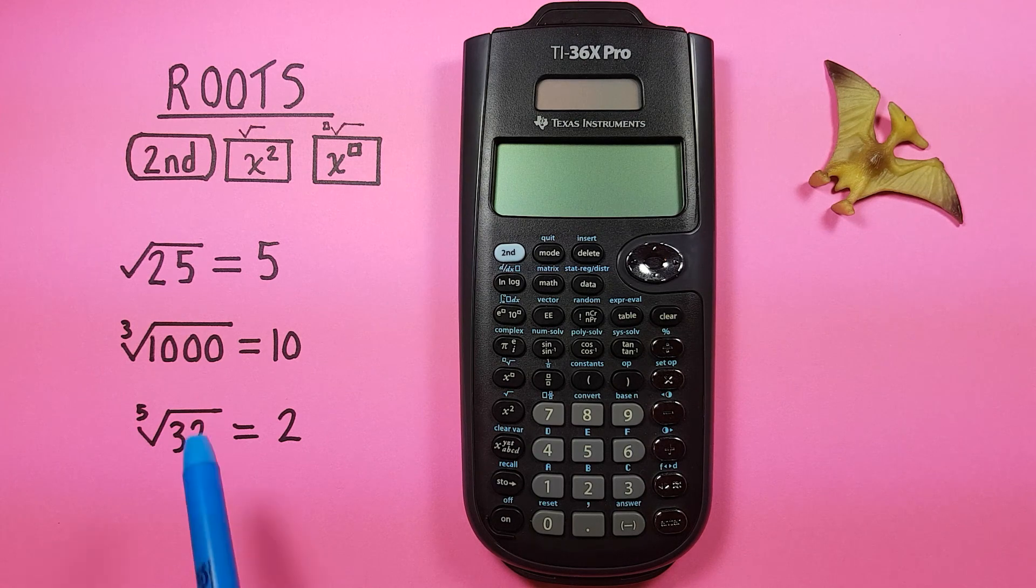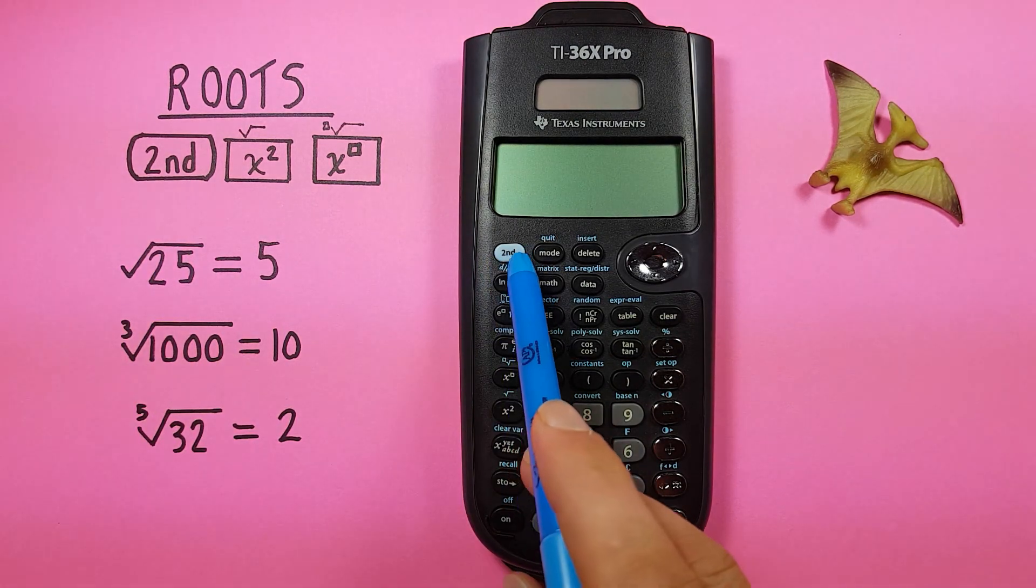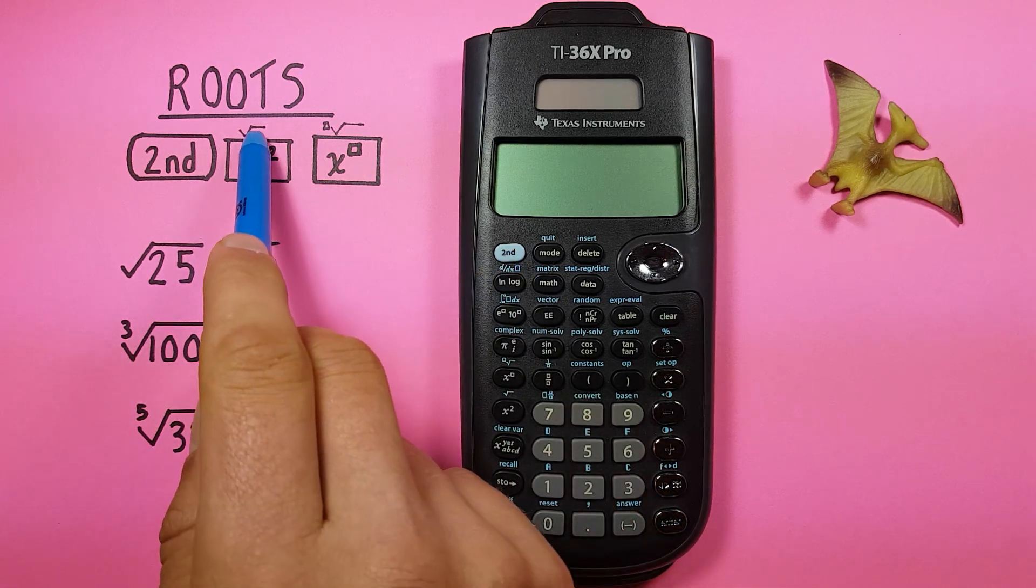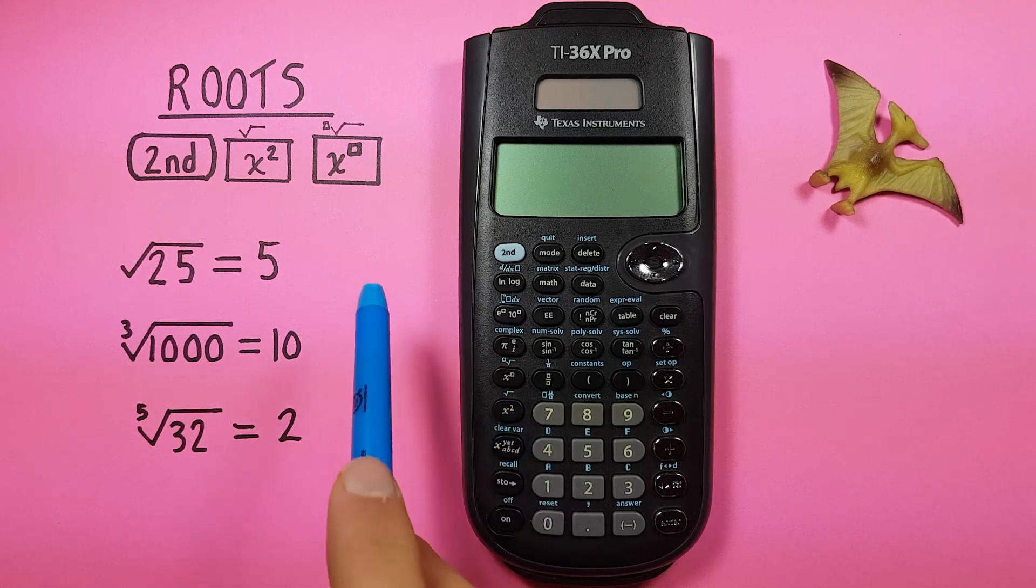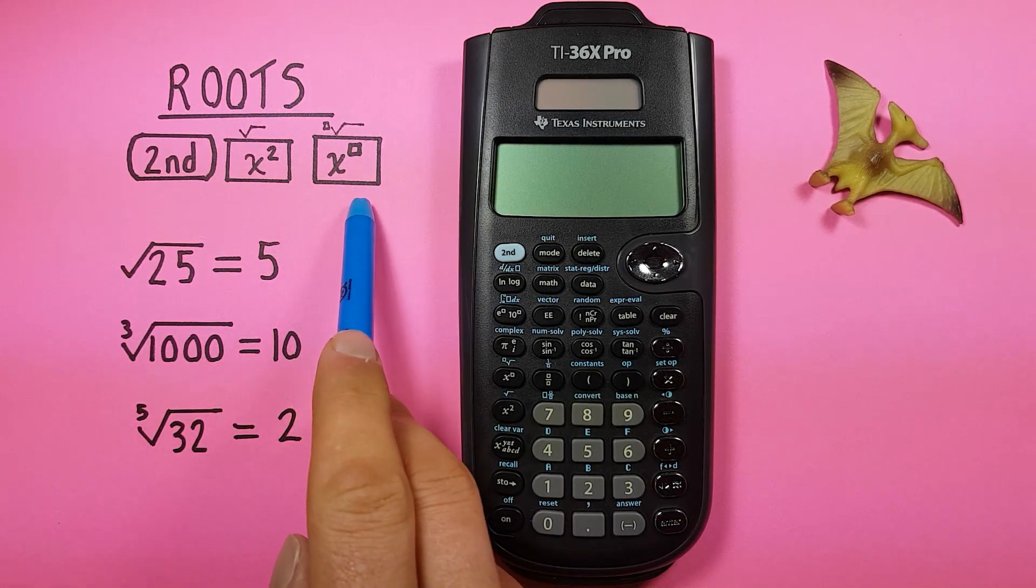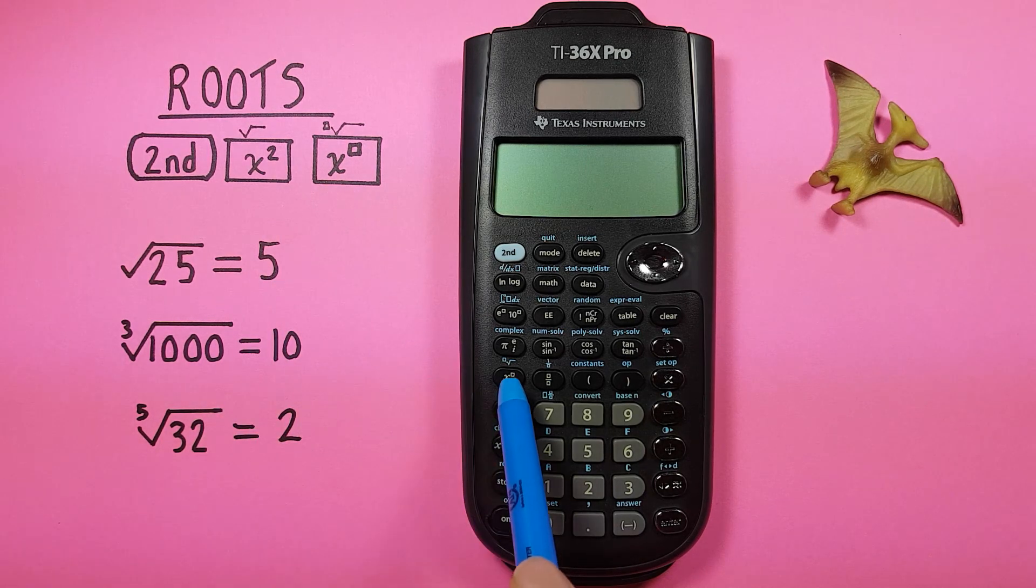To do this we'll be using the second function key, looks like that, located up here in the top left. The x squared with the root key as a second function, it looks like this, located here, and the x exponent key with the root key as a second function, looks like this, located here.